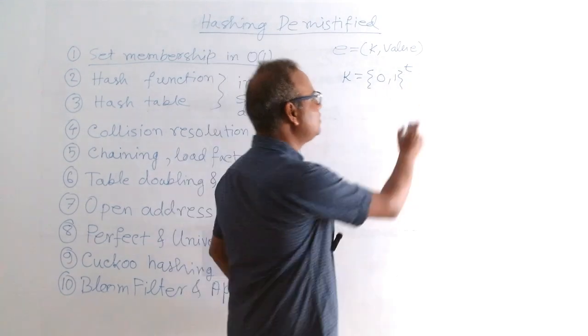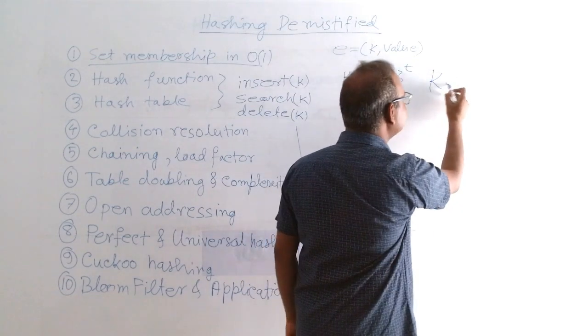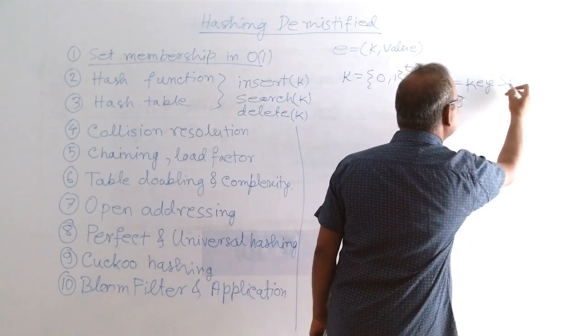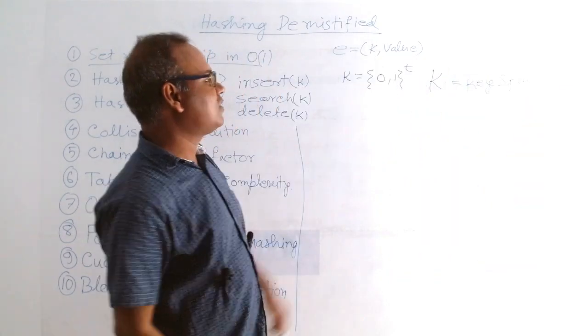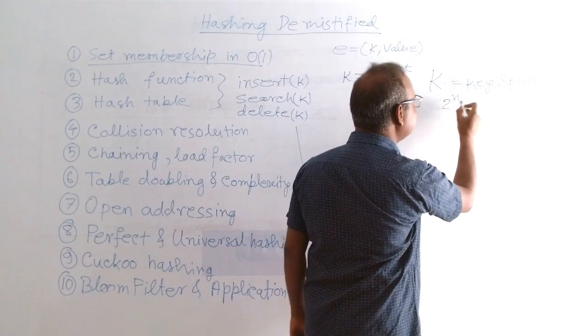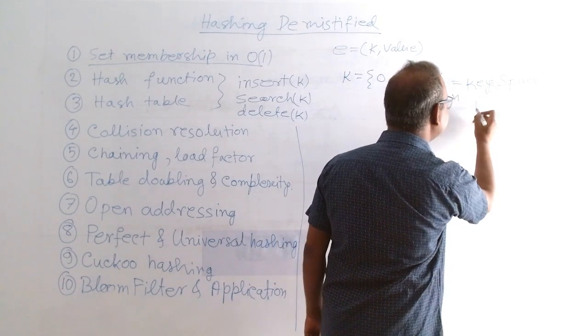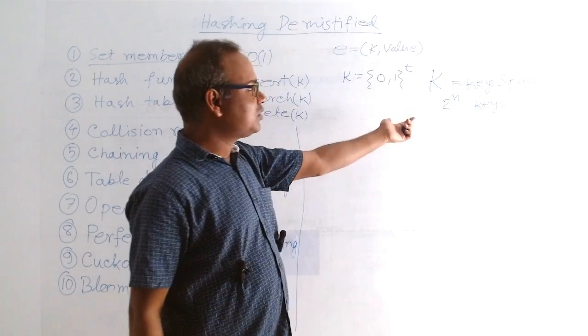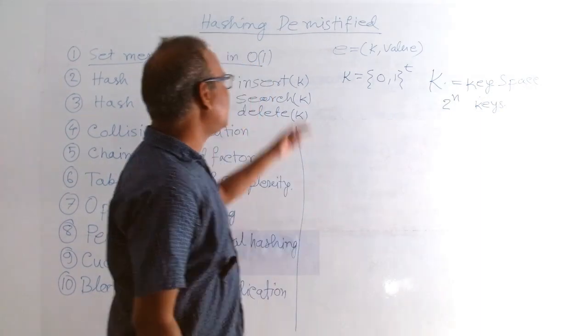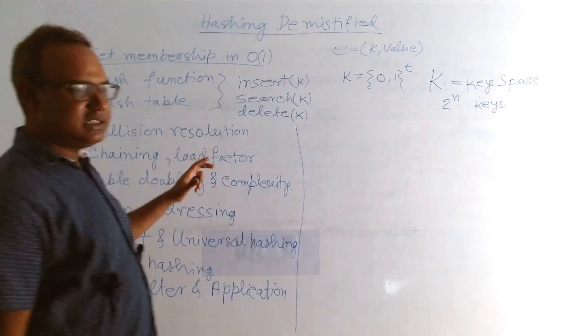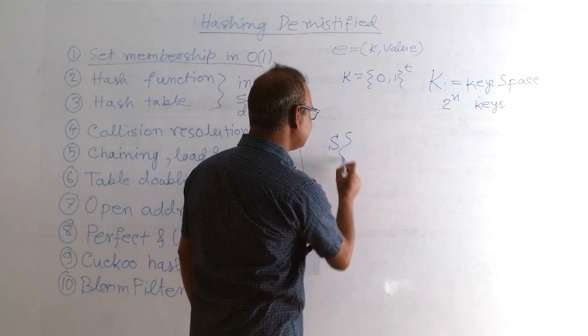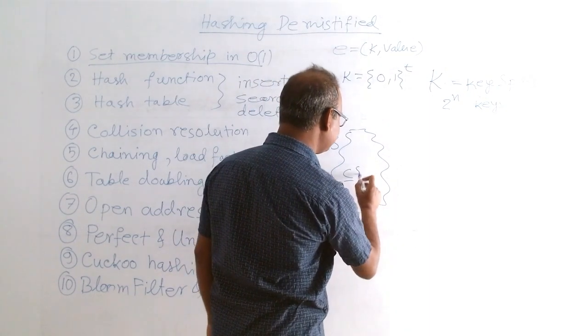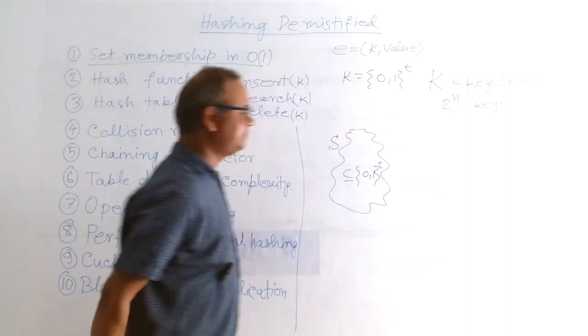The key space we generally denote with capital K. The key space can contain 2 to the power n elements, n keys. So there are possibilities of 2 to the power n number of arbitrary keys and some of them, some elements are inside the set. So this set contains a subspace of 2 to the power n.